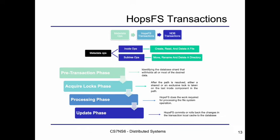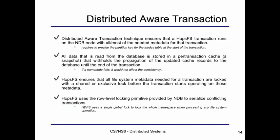We'll go through these phases with an example. HopsFS uses the distribution-aware transaction feature provided by NDB to ensure the locality of HopsFS transactions — that is, a transaction runs on the NDB node with all or most of the needed metadata. This requires HopsFS to provide the partition key for the inodes table at the start of the transaction. HopsFS also ensures all file system metadata needed for a transaction are locked with a shared or exclusive lock before the transaction starts, and uses the row-level locking primitive provided by NDB to serialize conflicting transactions.